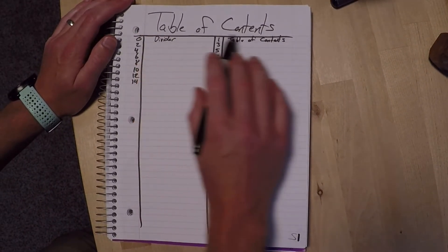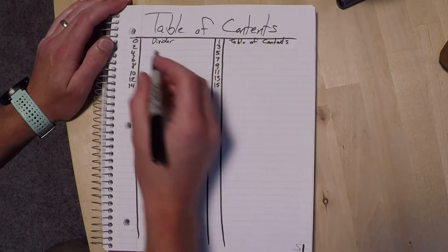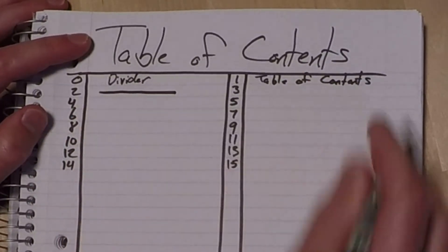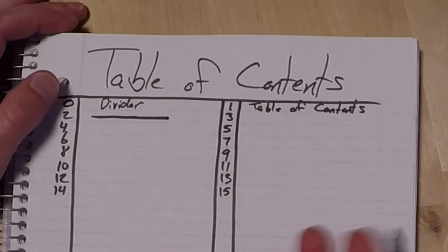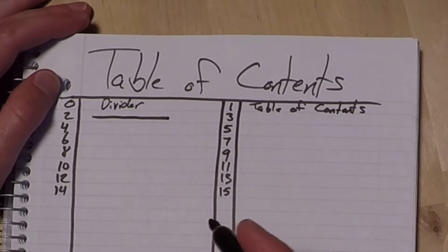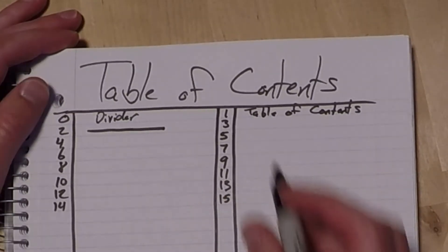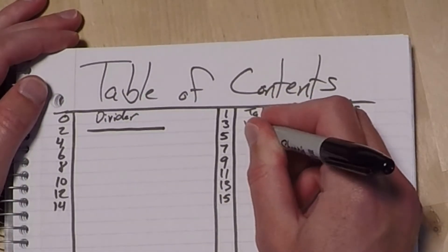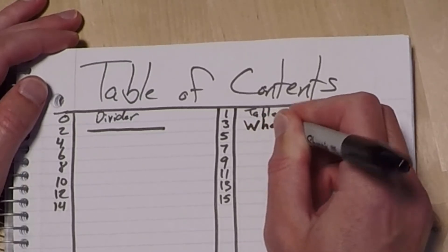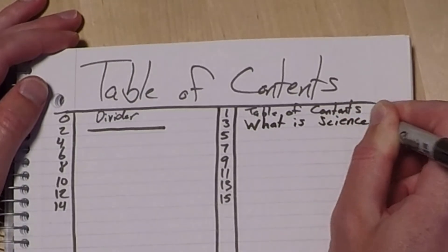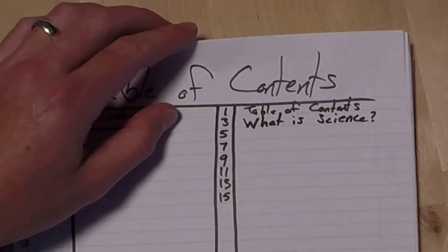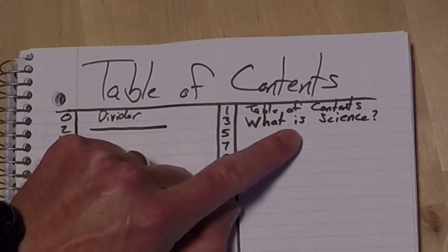And then I would keep doing that until I finish my notes basically. So I have my divider, I have my table of contents. We're actually not going to have anything on the back of our table of contents just because we don't want to mess up our table of contents in any way. But on page three is when our first notes are going to start. So our very first notes are going to be about science. So it's what is science? Question mark. So that will be right here. What is science?